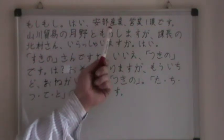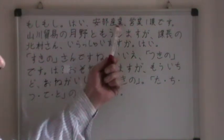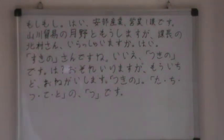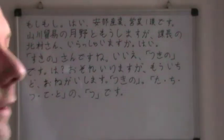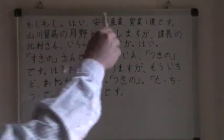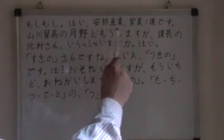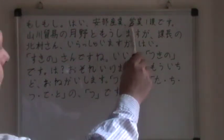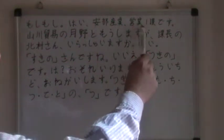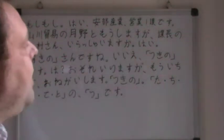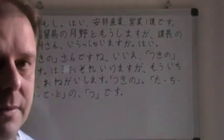Abe — that's a name. Sangyo means industry. Abe Sangyo — Abe Industries. Egyo — that's the... Egyo means business or operation.